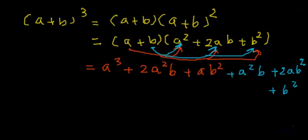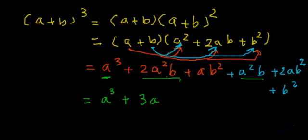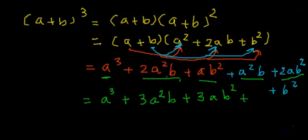Now let's look for like terms and accumulate them. The first term is a cubed, and there is no other a cubed term, so we write it as is. Then 2a squared b plus a squared b gives 3a squared b. Next, ab squared plus 2ab squared gives 3ab squared.